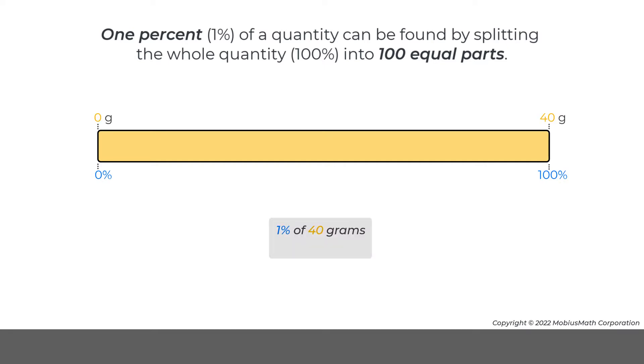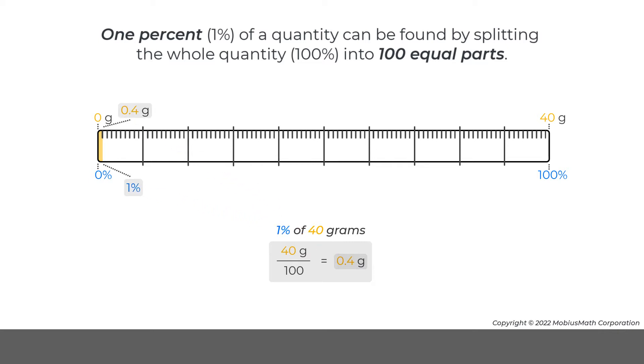1% of the 40 gram cheese stick can be found by splitting 40 grams into 100 equal parts to find the weight of one of the equal parts. Since 40 grams divided by 100 is 0.4 grams, 1% of the cheese stick weighs 0.4 grams.